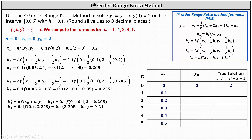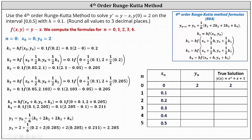Now that we have k sub 1 through k sub 4, we can determine y sub 1. y sub 1 equals y sub 0 plus one-sixth times the sum of k sub 1, 2k sub 2, 2k sub 3, and k sub 4, giving us y sub 1 equals 2.205. Let's record this in the table. Comparing to the true solution, we have a very good approximation.